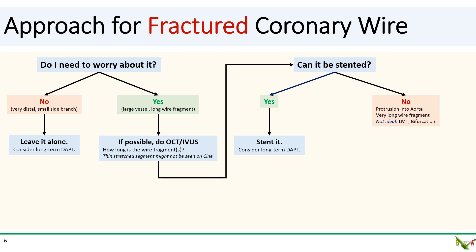Now, if your wire fragment is very long or if it protrudes into the aorta, then you're not going to be able to stent it. Also, if the wire fragment is in the left main or if it spans across the bifurcation, it may not be ideal to put a stent there either.